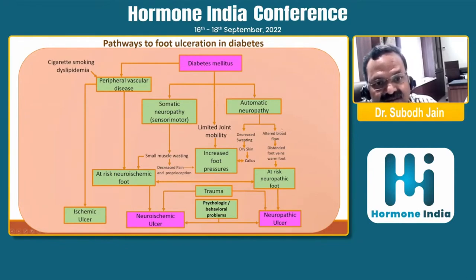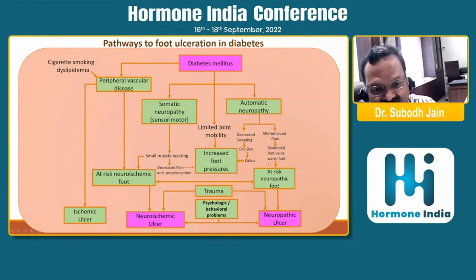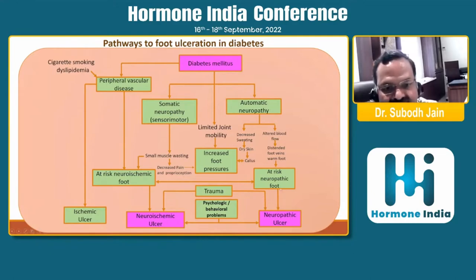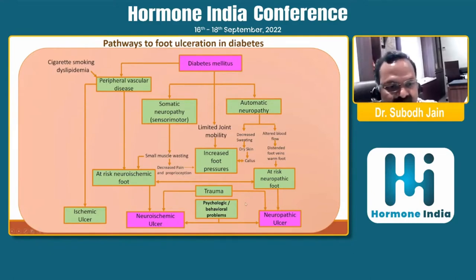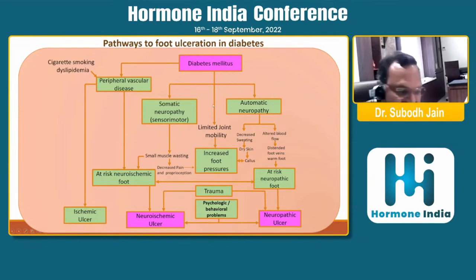Autonomic neuropathy can also lead to altered blood flow — poor venous return, stagnation of blood flow — and dilated foot veins. This is the at-risk neuropathic foot and can lead to pure neuropathic ulcers as well. Any two factors combined in a single patient can lead to foot ulceration.